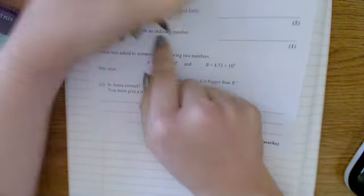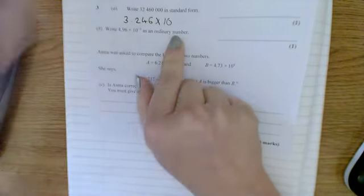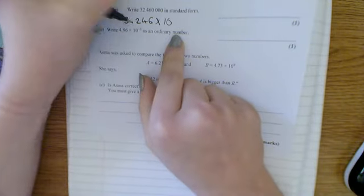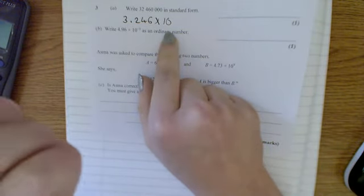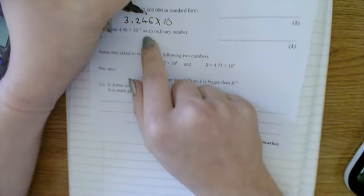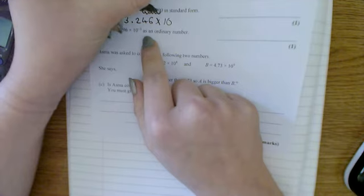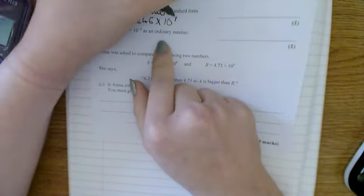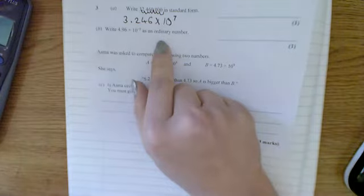It's times 10, because that's what standard form is. And then we're thinking about the position of the decimal point, how that's moved, or how the numbers have moved with relation to the decimal point. So that's 1, 2, 3, 4, 5, 6, 7. So 3.246 times 10 to the 7.